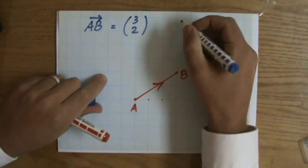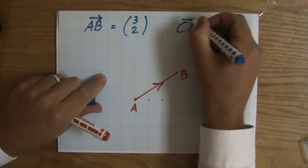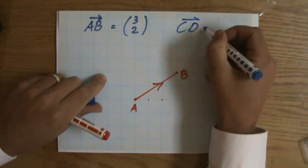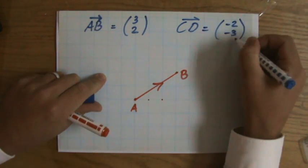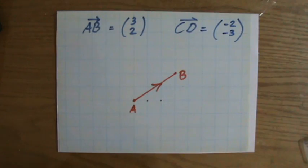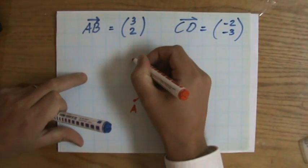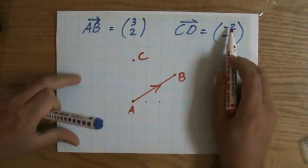One more, because I'm going to explain this in the next video as well. Let's have the vector CD, (-2, -3). Let me start somewhere for C. I'll start for C over here, so let's see. Minus 2. The single-column vector, the top number is always the horizontal translation.